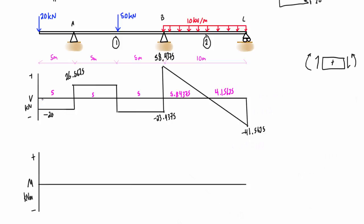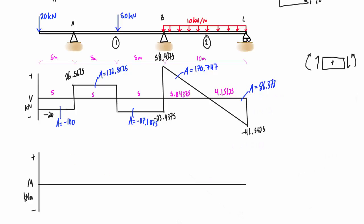Now for the bending moment diagram: we take the areas of the shear diagram as changes in magnitude going from left to right. Negative areas give negative changes; positive areas give positive changes. Constant shear produces linear changes in the BMD; linear shear produces parabolic changes. The internal bending moment at the free end should be zero, and it should also end at zero at C.